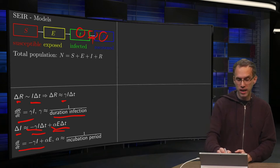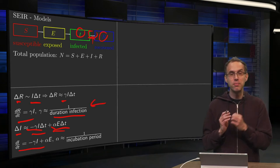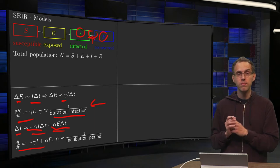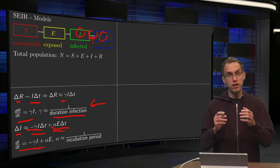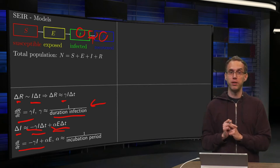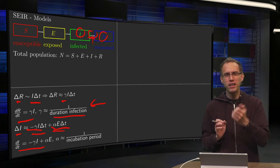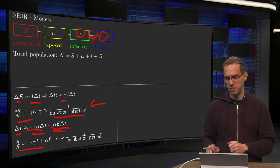And similar to gamma, we can also estimate the value of alpha. Alpha is more or less equal to 1 over the incubation period. So for alpha and gamma we have pretty decent estimates.